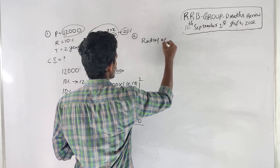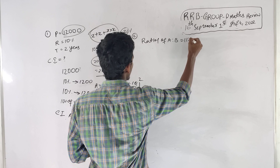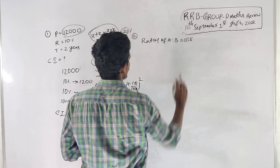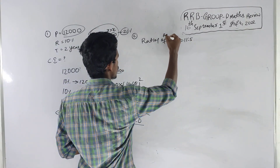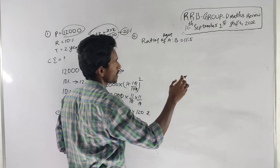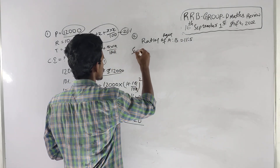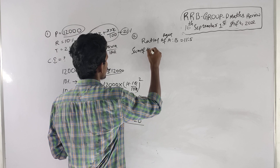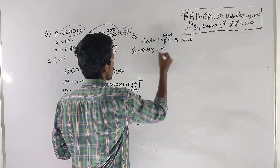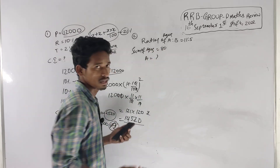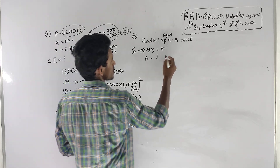Next question: the ratio of ages of A and B is 11 is to 5. The sum of ages is equal to 80. We need to find each age.